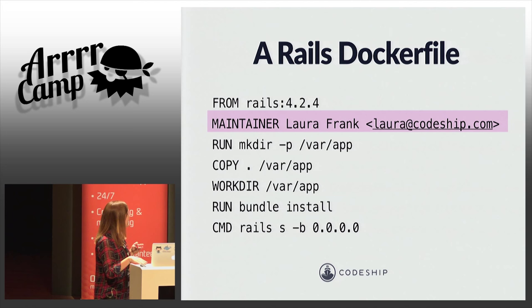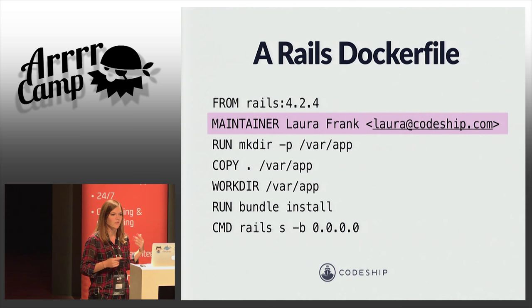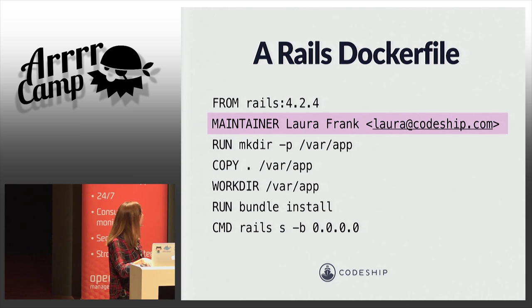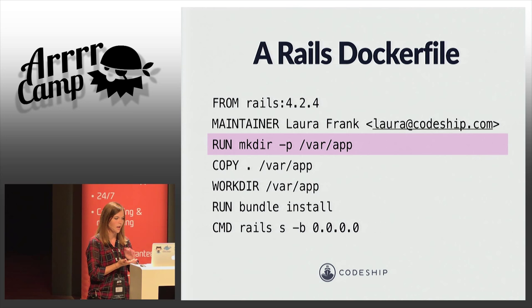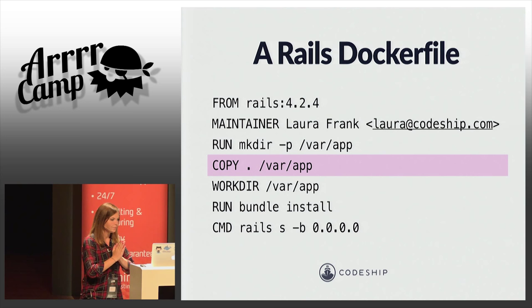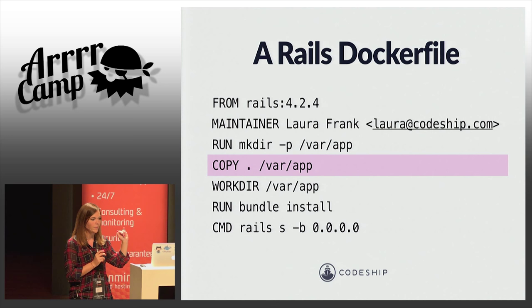The next thing is MAINTAINER — it's optional, but if you see an image you're using, you can look at the maintainer when things break and email them to tell them their image is broken. Then we have a RUN command, which is just straight up executing something like mkdir during the image build process. There is also a COPY command, and a separate one called ADD — these are very different. If you use ADD with a tarball, it will just unzip everything for you and do other things you're not expecting. COPY is a good way to introduce files into your container. In this case I'm copying everything in my current directory into the new directory I just made — since this is a Rails app, I'm copying my entire Rails app into that directory.